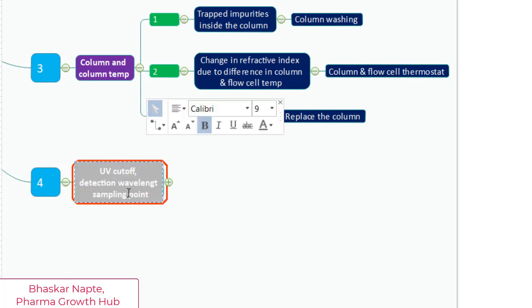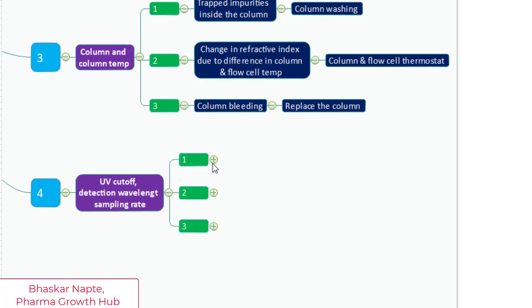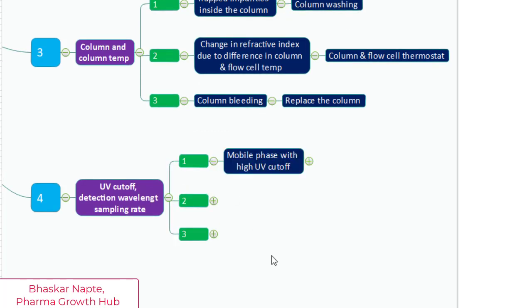The fourth point is the UV cutoff detection wavelength and the sampling rate. I will explain all these three important points in the coming presentation. First, let's talk about the mobile phase with high UV cutoff.